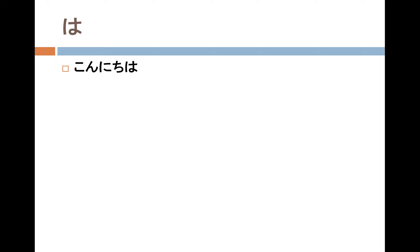I often see the mistake that when you write 'konnichiwa,' people write the wa sound using hiragana 'wa,' not 'ha.' But the correct writing is hiragana 'ha' for konnichiwa. Because if you write it in kanji, it looks like this — konnichiwa.